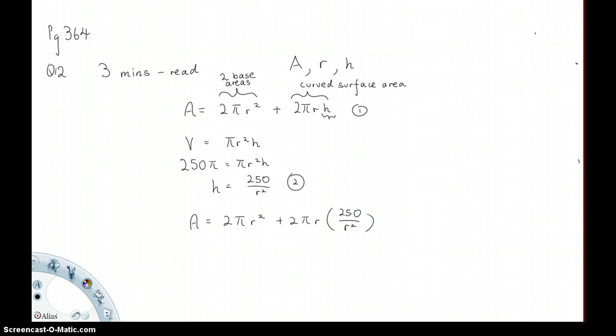I'll give you all two minutes to actually simplify this. Once we do, A will be equals to 2πr² plus 500π over r.